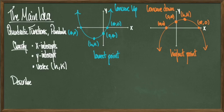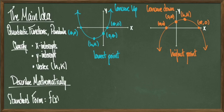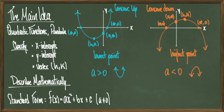To describe quadratic functions mathematically, we have two forms. The first is called the standard form, which looks like f(x) = ax² + bx + c, where a is not equal to 0. Basically, a quadratic function is a polynomial function of degree 2. Normally the standard form doesn't give you much information right off the bat, but it does tell us if our parabola is concave up or concave down. If a is a positive number, then you're concave up, and if a is a negative number, then you're concave down.